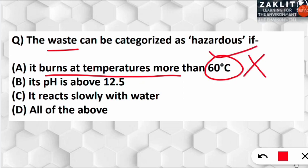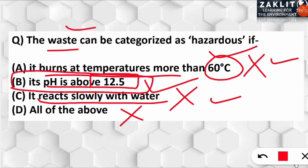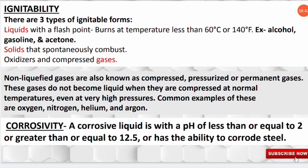Option B says pH is above 12.5 — yes, this matches the corrosivity criterion for hazardous waste. Option C says it reacts slowly with water — that is not hazardous, since it should react vigorously. 'All of the above' is also eliminated since A and C are incorrect. Therefore, option B is correct: a substance with pH above 12.5 is considered hazardous. Let's move to the next question.